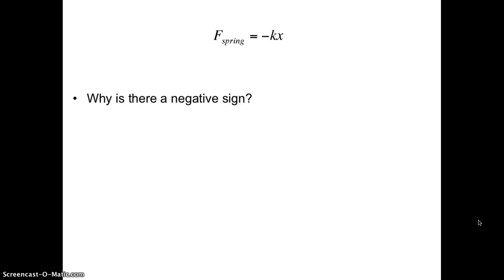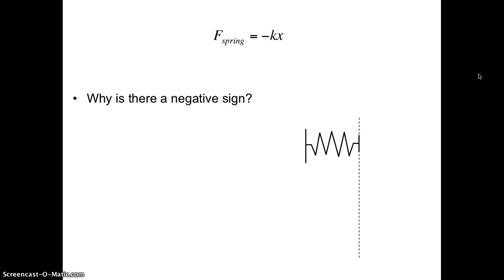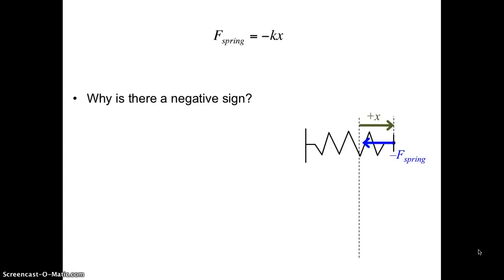You might be wondering why there is a negative sign in this equation. We're going to answer this by looking at two examples. Here's a horizontal spring. If I pull this spring to the right from its relaxed length, then the spring force will pull back to the left. So because the displacement is rightward, it's positive. And because the spring force is leftward, it's negative.